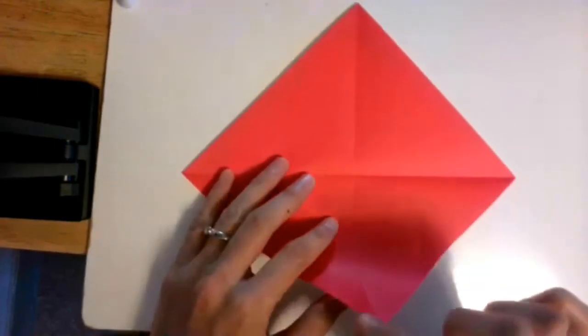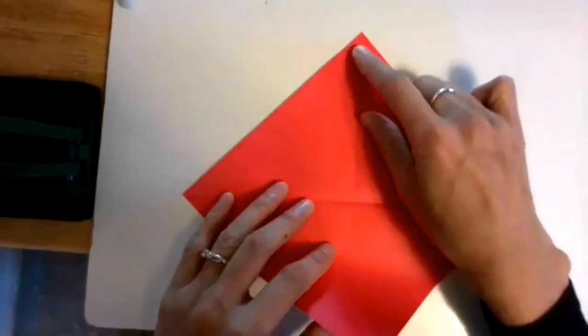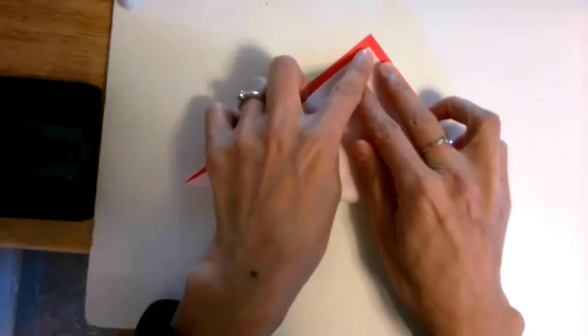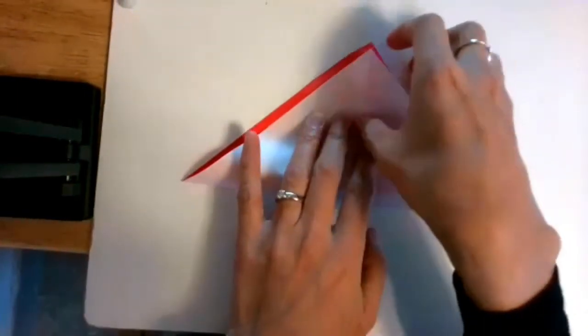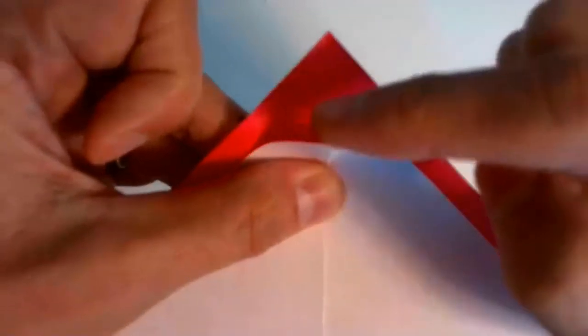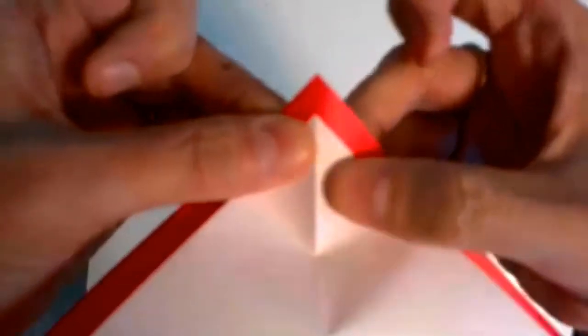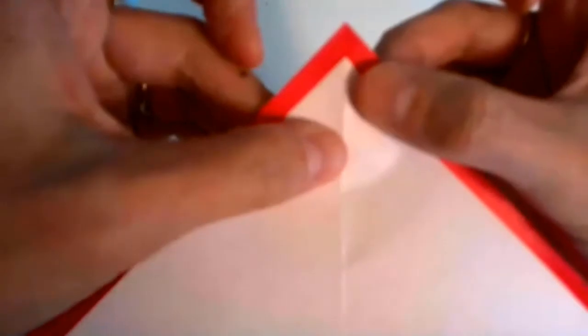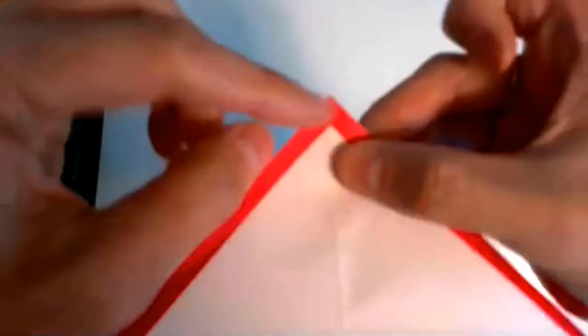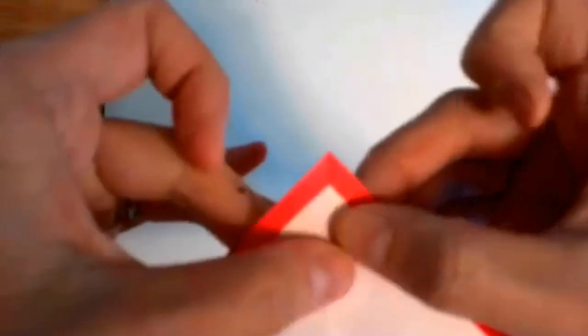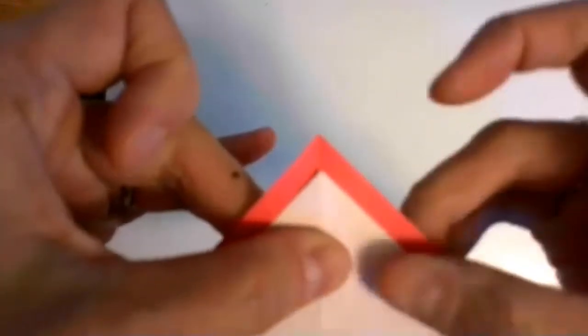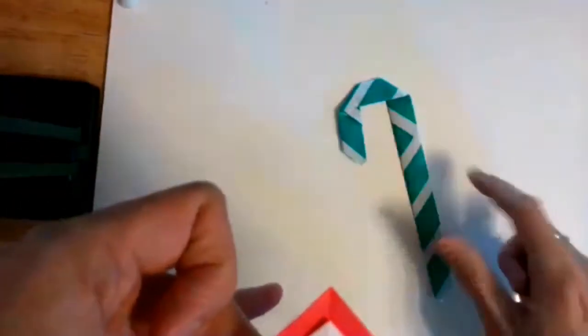Now bring the bottom corner almost to the top, but not quite to the top. Just below the top corner. This corner should point along the crease in the center. This little gap should be a tiny bit smaller than your pinky nail. This will ultimately become the stripe on your candy cane.